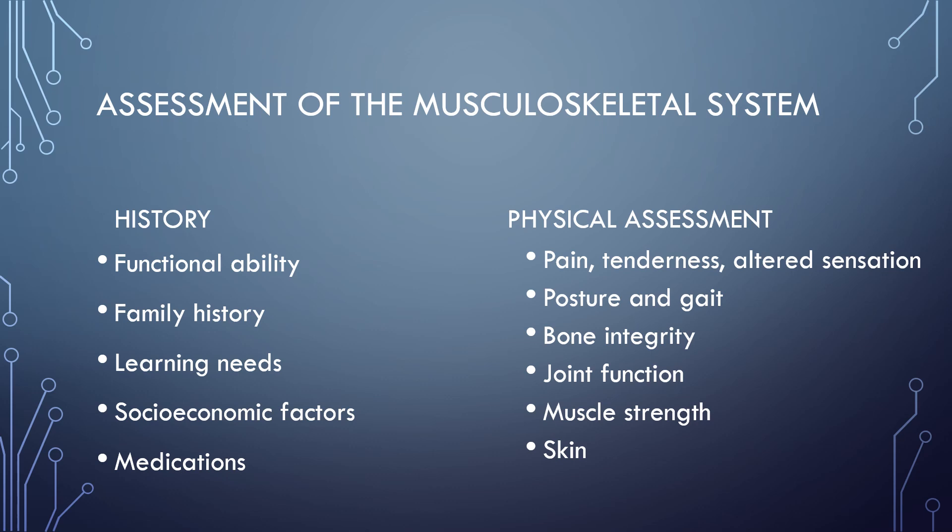Other things we may need to consider with our assessment include their developmental stage. We focus on adults and the elderly in Block 1, but the musculoskeletal system does change with developmental stages. We also need to consider lifestyle and attitudes and values related to mobility. A young adult who is an athlete may be considered healthy, but they are at risk for musculoskeletal issues, especially injuries. Some people do not value exercise and mobility, which may lead to decreased mobility and bone loss.